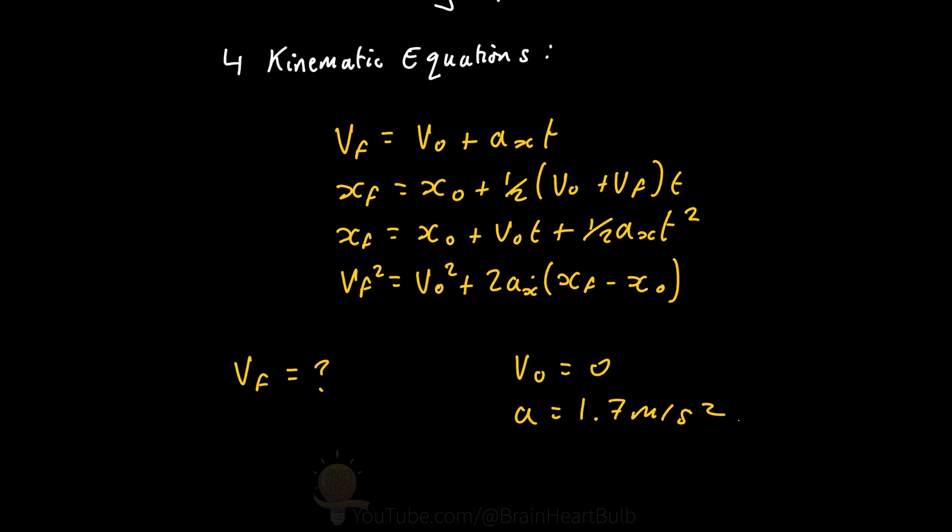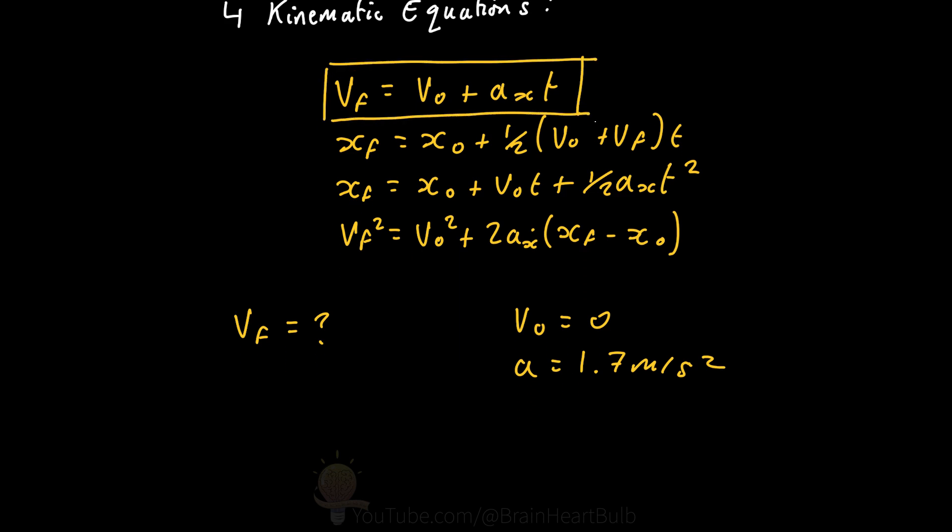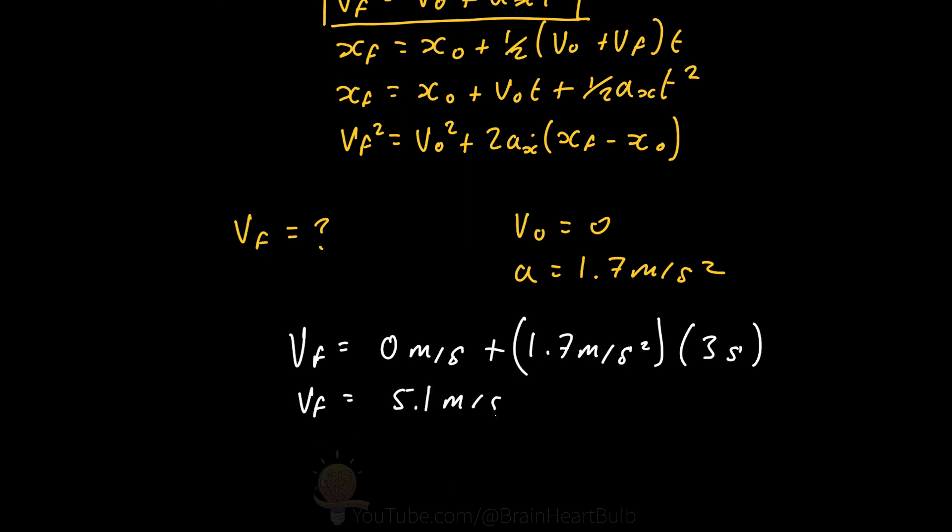So if we choose equation one, we can just plug in our known variables on the right-hand side, and out pops our final velocity. And we get 5.1 meters per second, which is roughly 11 miles per hour.